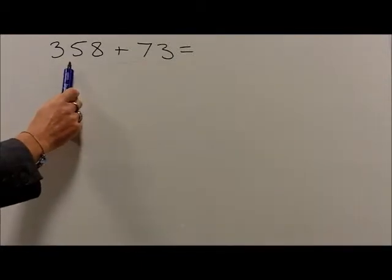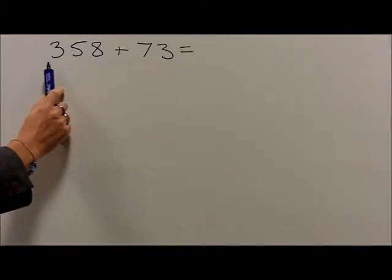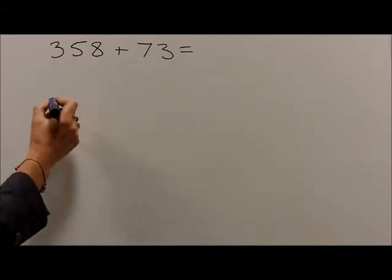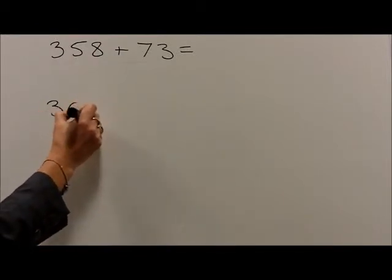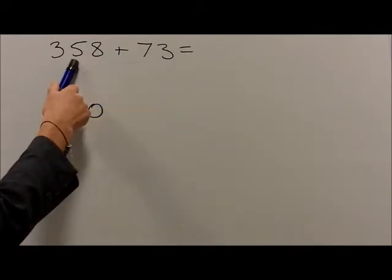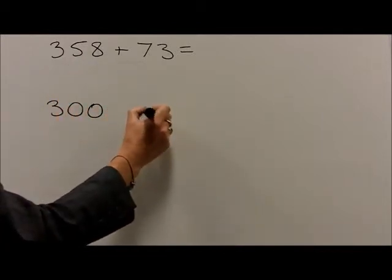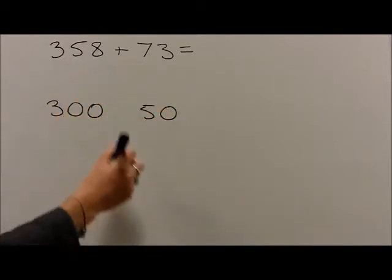First of all, 358 is partitioned into 3 hundreds, which are 300, 5 tens, which are 50, and 8 units, which are 8.